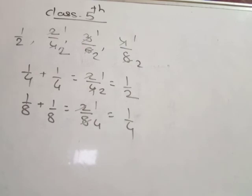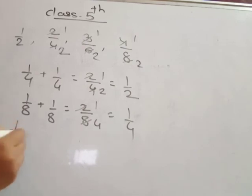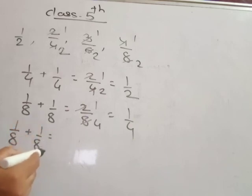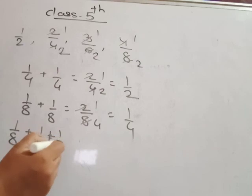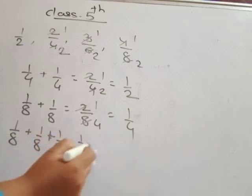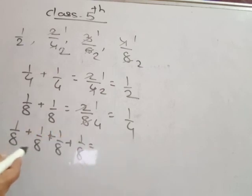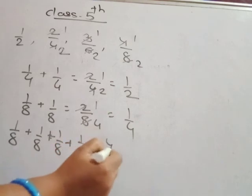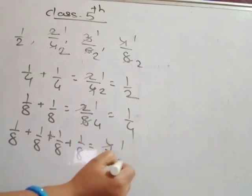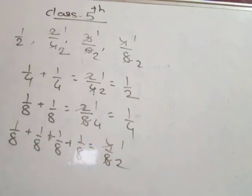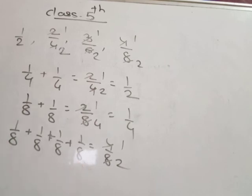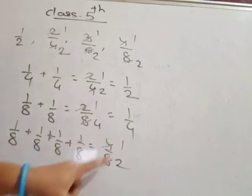How many one-eighths are in one-half? 1/8 + 1/8 = 2/8. Again 1/8 + 1/8 = 4/8. Four-eighths means 4/8 = 1/2. So you take 1/8 four times to get one-half.